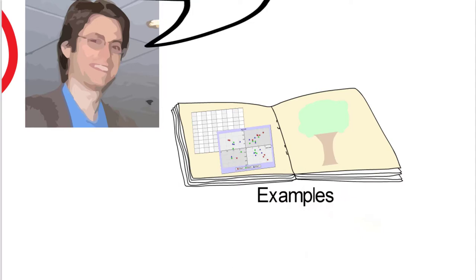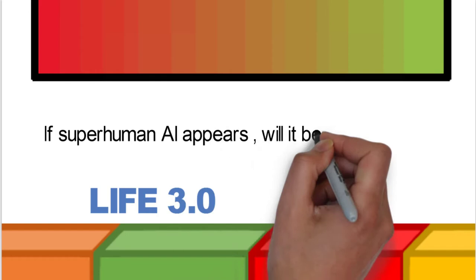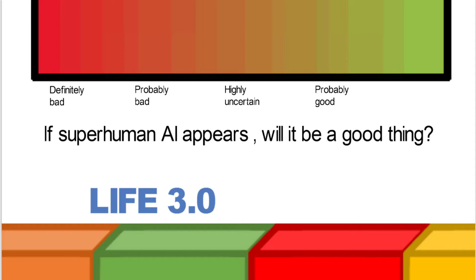Then in the rest of this chapter, he kind of puts together some charts and what he calls his tree, which we'll get into. And let's look at some of those examples. One of the charts he talks about is this kind of heat chart, which is about a questionnaire of if superhuman AI appears, will it be a good thing? Definitely bad, probably bad, highly uncertain, probably good, and definitely good is over there in the green.